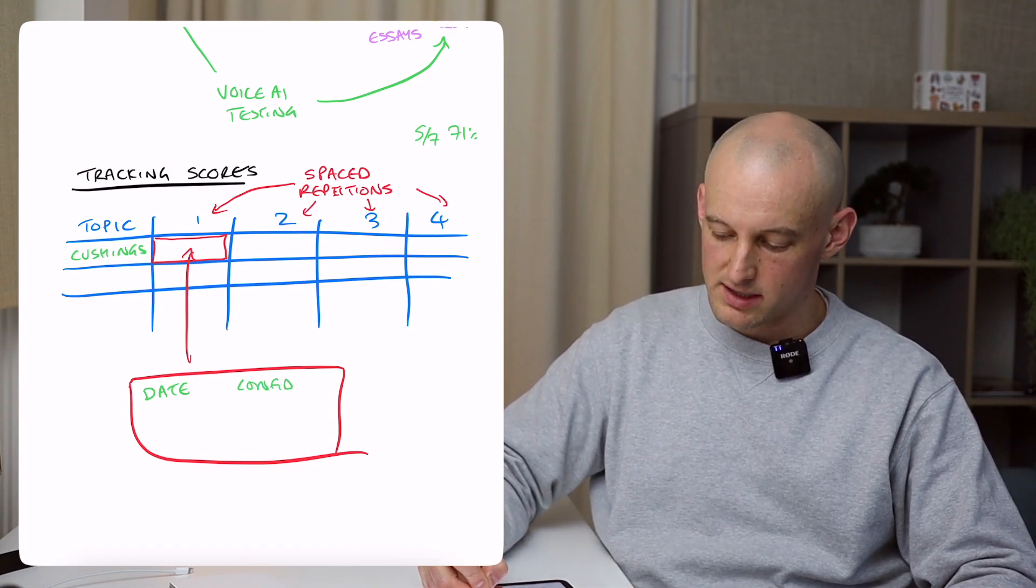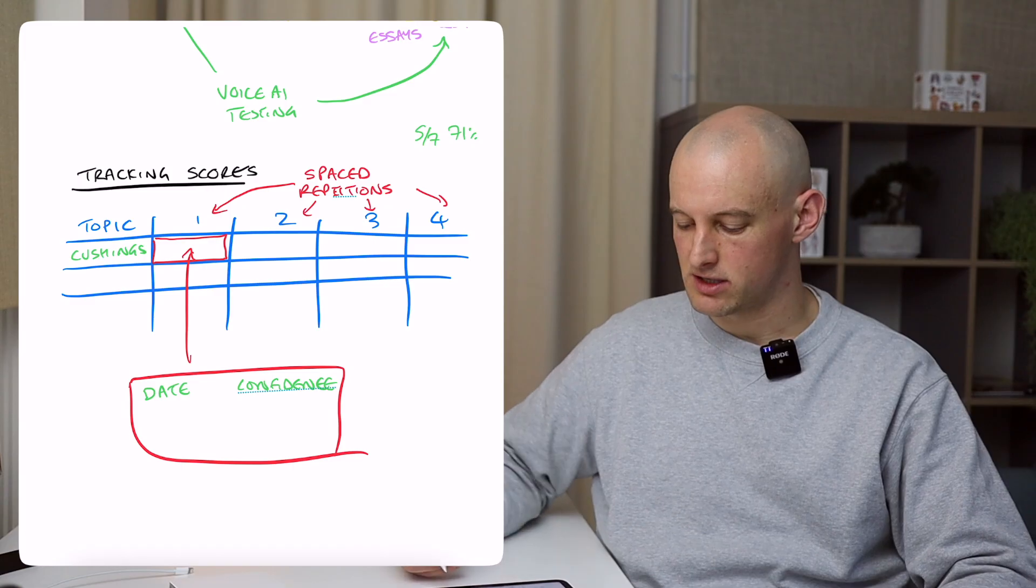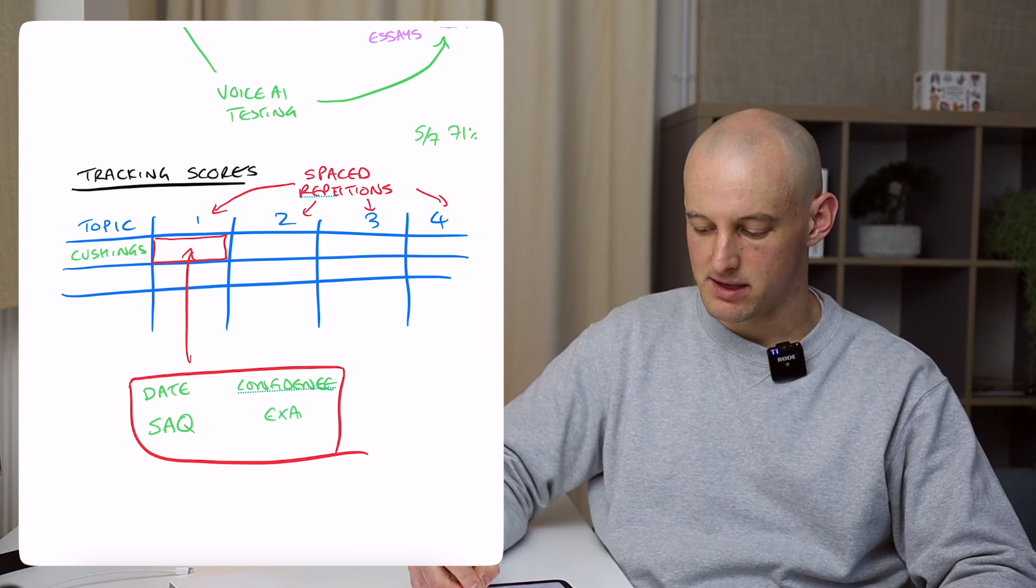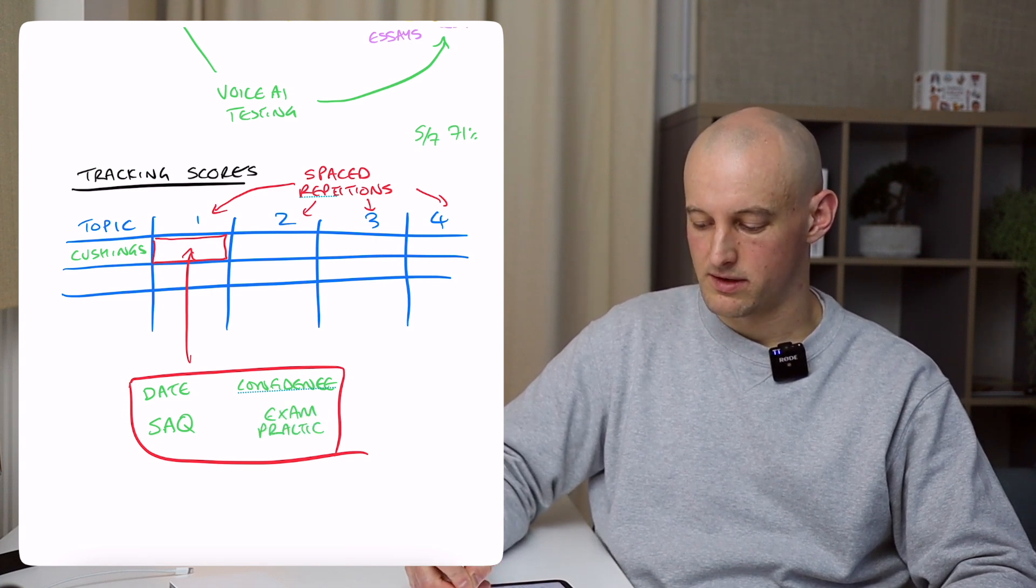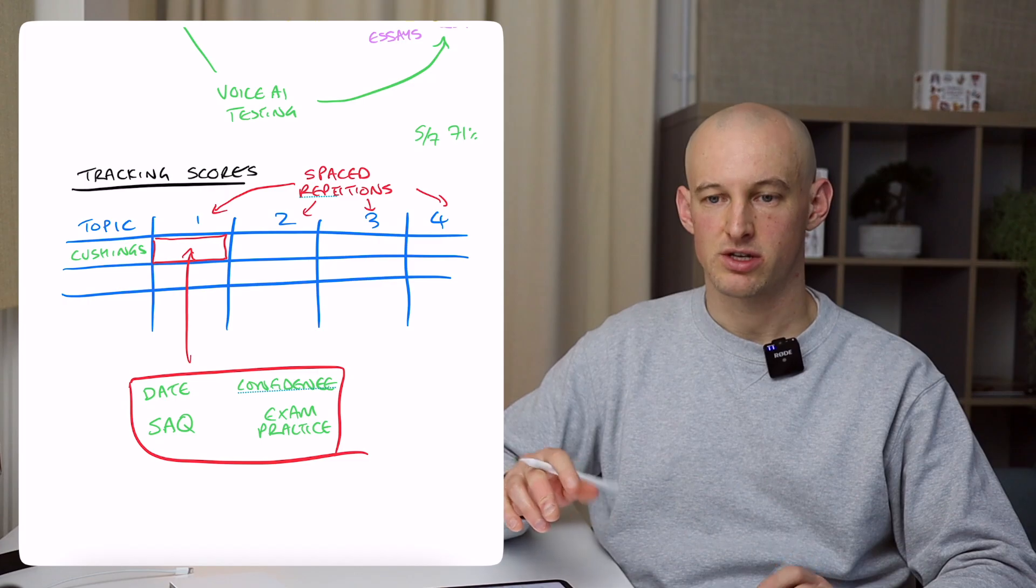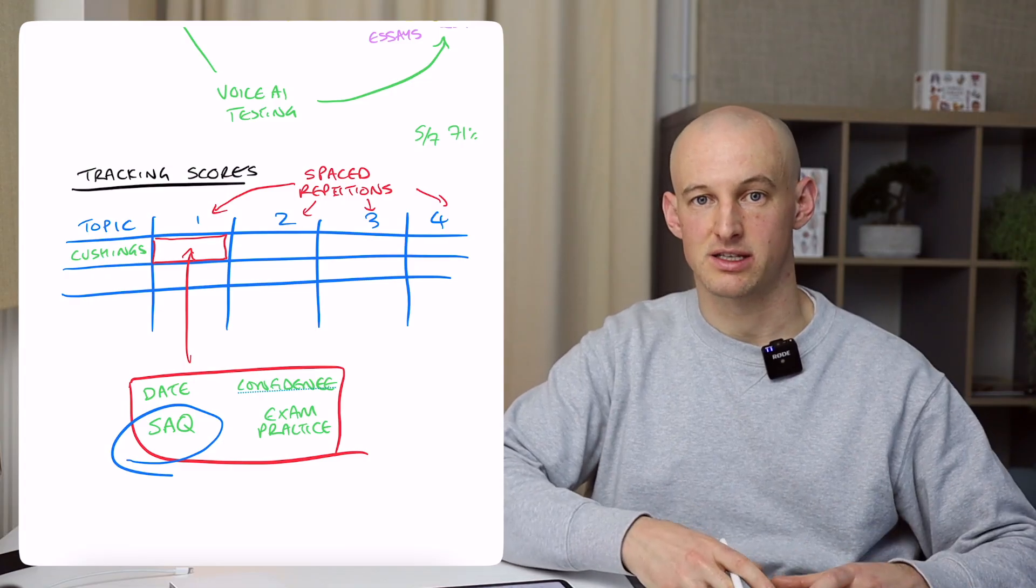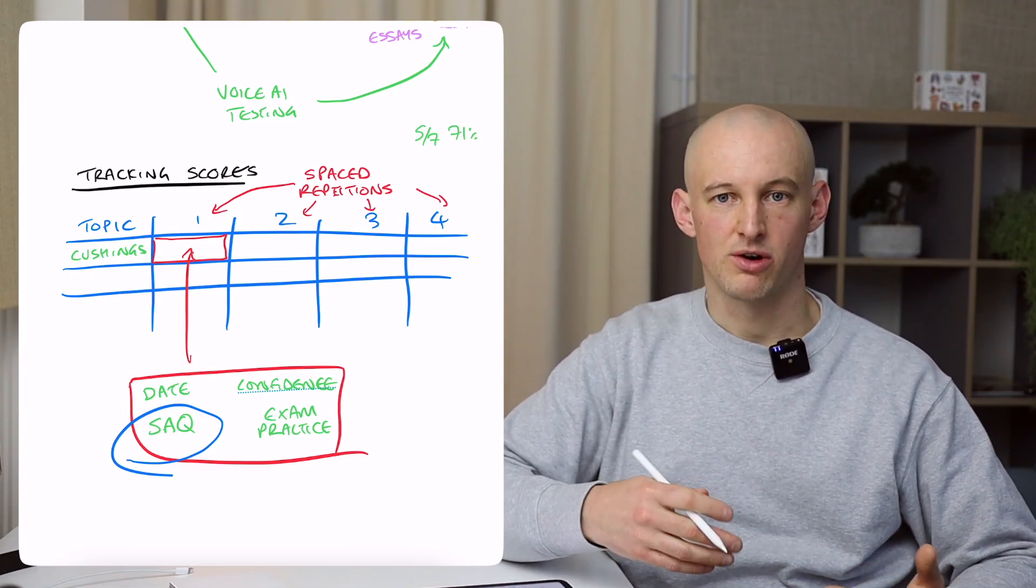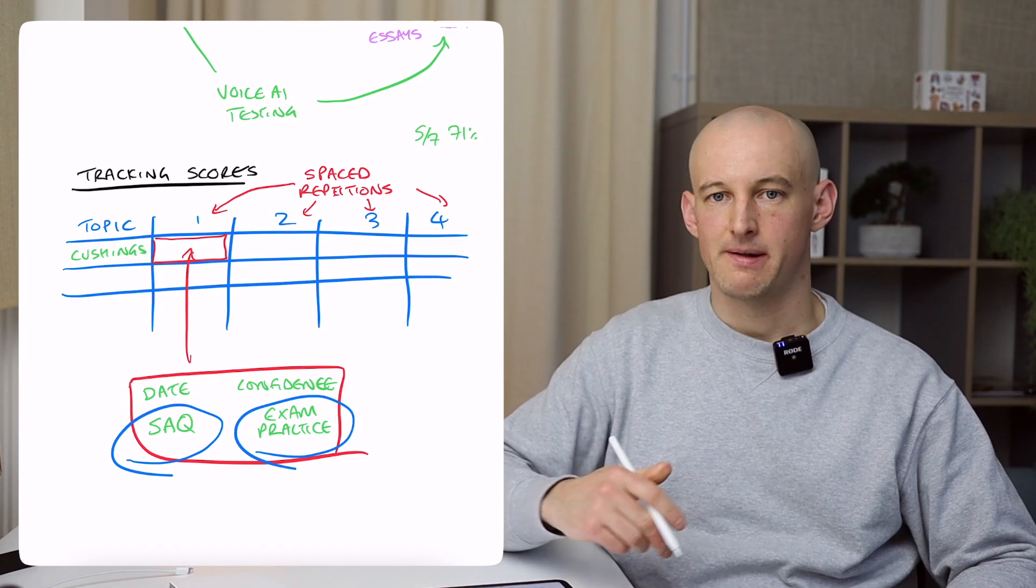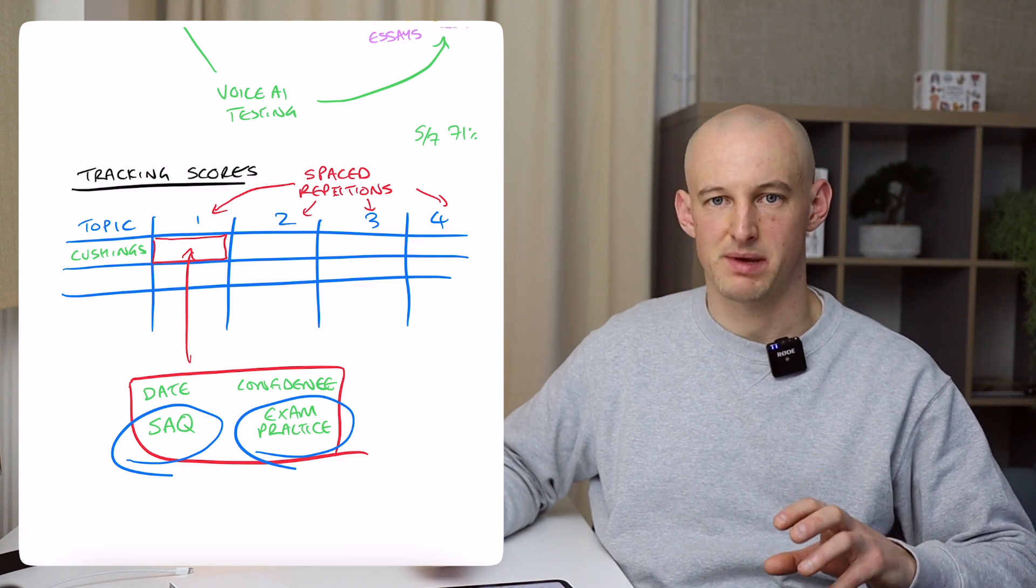Then put in your confidence. So I would just record, you know, low, medium, high confidence on that topic. Then your score on the short answer questions and then your score on the exam practice questions. So you're creating an objective assessment of how good your knowledge is with the short answer questions. This is how good your knowledge is as a baseline before you're studying the topic. So kind of from scratch, from cold, without having gone through stuff. And then you're getting a score on your exam practice. So how good you are after you've done the studying session and how good you will be in your exam.